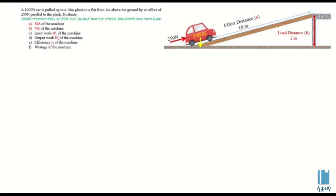At present, the second ingredient is what we're talking about. We're talking about a 1000 newton car pulled up. We're talking about a number of values. The 1000 newton car is pulled — load the same way that we are working on, and we are going to use this as an example.